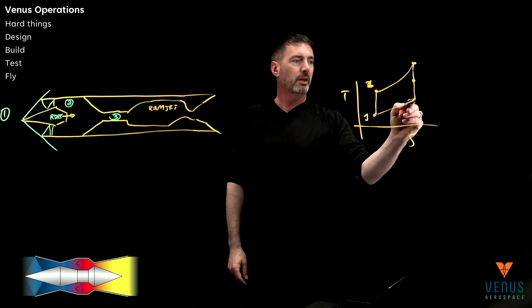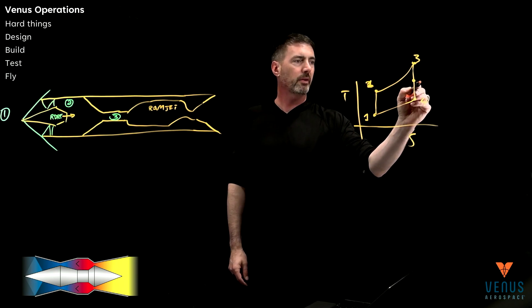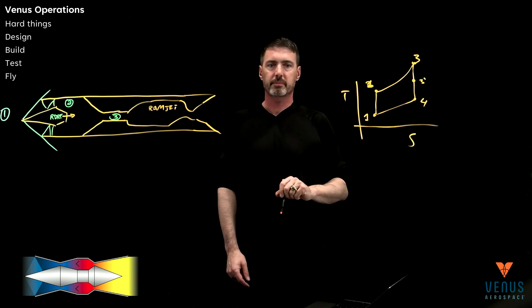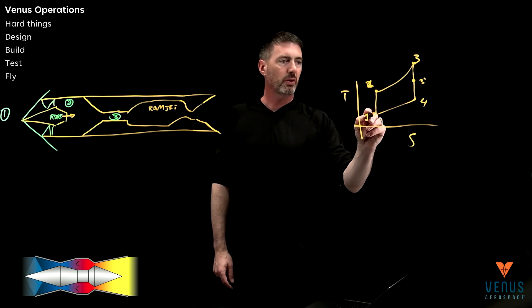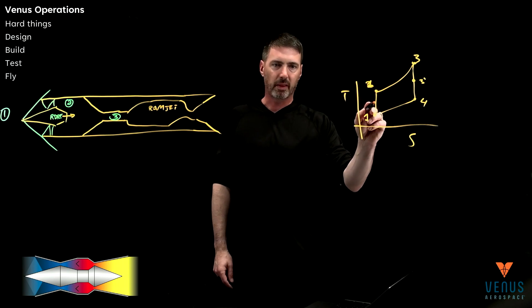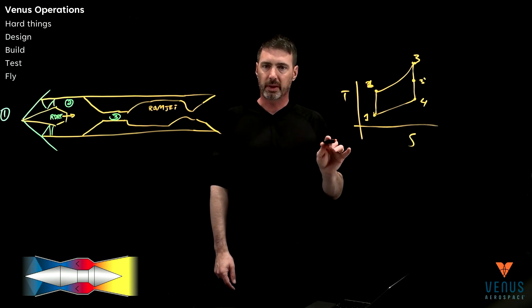And so a couple points on here, two, three, four, and I'm going to call this three prime. So the first thing on this is I am showing isentropic compression with a little lean to the right. So it's just slightly non-isentropic, and that's intentional. We'll get into that in a second.